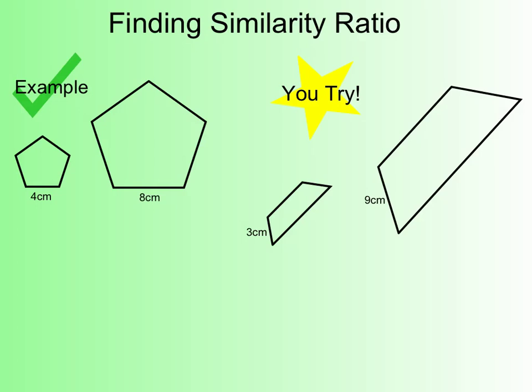I'm going to take my known sides: 4 centimeters over 8 centimeters. If I reduce that, I get a ratio of 1 over 2. So that's my similarity ratio. All I have to do is write the smaller over the larger. You go ahead and try that next problem.